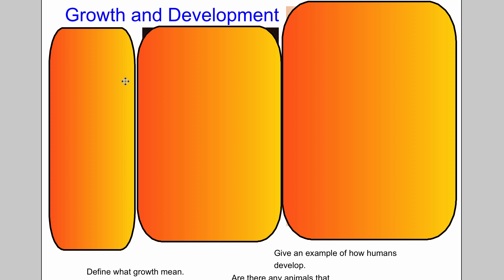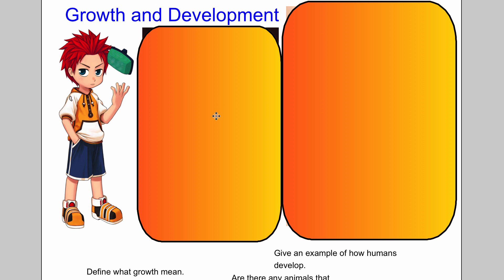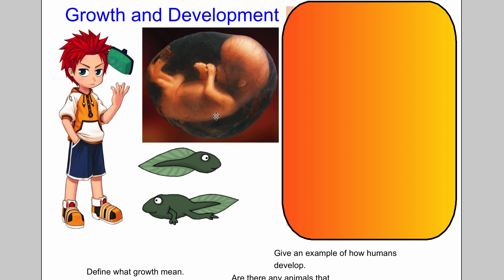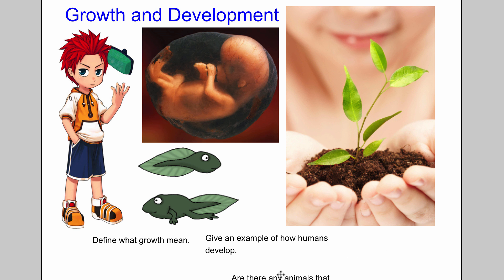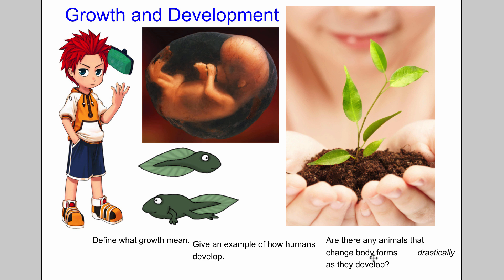Growth and development. Everything that is considered living goes through some stages of growth and development — they get more complex or they get bigger. Tadpoles are a good example. Humans develop and grow. That is one characteristic of living things.